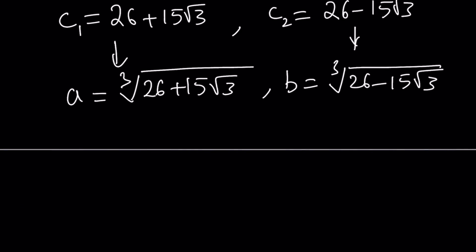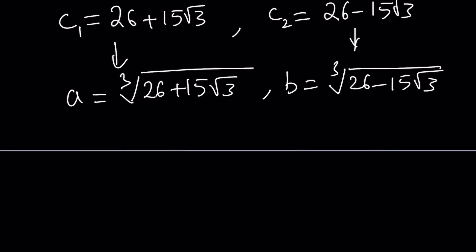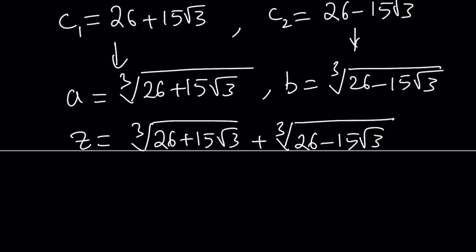So those are the a and b values. We said that z is equal to a plus b. So let's go ahead and add these values. As if they're going to simplify when we add. They're not. It's just going to be a radical plus a radical. But these are conjugates. You can cube both sides, you can do some stuff.